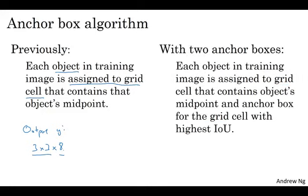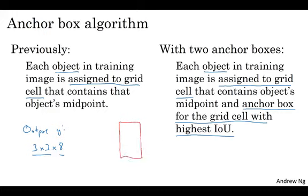With the anchor box, you now do the following. Now, each object is assigned to the same grid cell as before, assigned to the grid cell that contains that object's midpoint, but it's assigned to a grid cell and anchor box with the highest IOU with the object's shape. So you have two anchor boxes, you would take an object and see, so if you have an object with this shape, what you do is take your two anchor boxes, maybe one anchor box is this shape, that's anchor box one, maybe anchor box two is this shape.